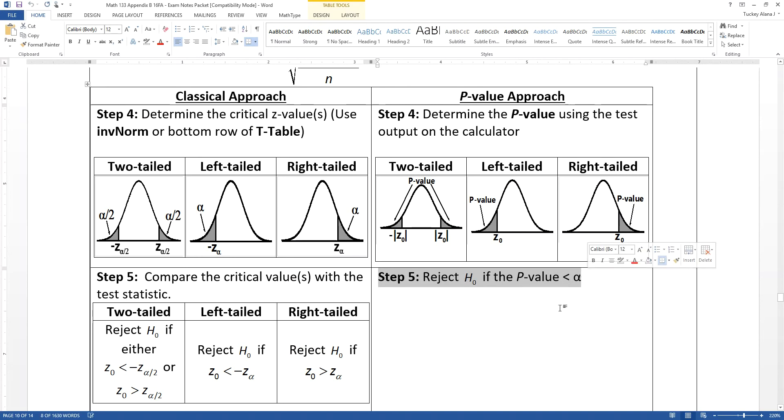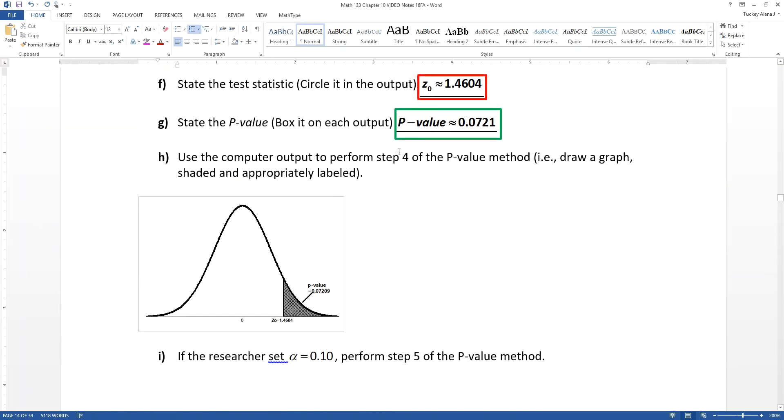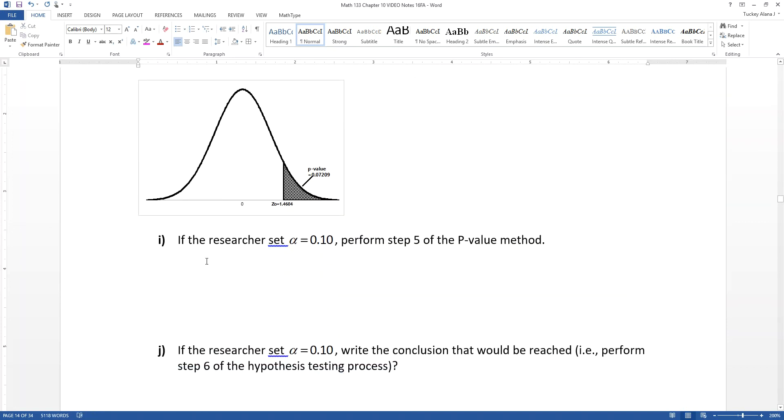Well, what we found had a p-value of 0.07. 0.07 is in fact less than our 0.10, which is our alpha. Therefore, we will reject the null hypothesis.